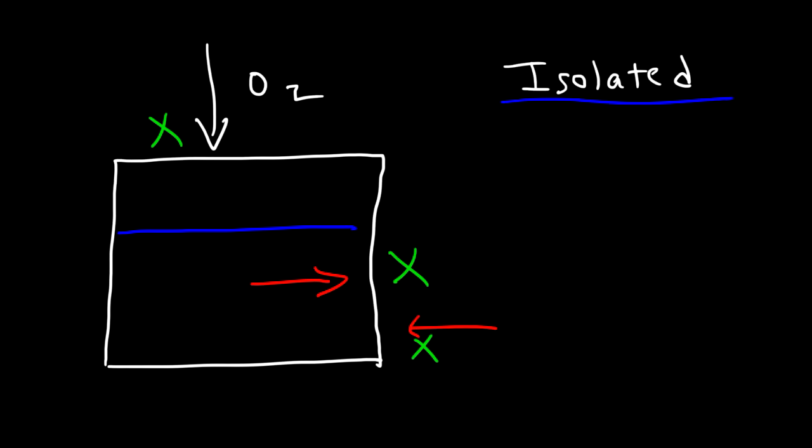So just to review: in an open system, matter and energy can enter or exit. In a closed system, matter cannot transfer into or out of the system, but energy can. And in an isolated system, nothing can enter, nothing can leave. Matter and energy cannot enter or leave an isolated system. And so those are the differences between these three systems.